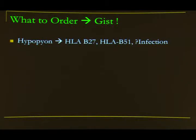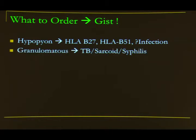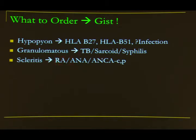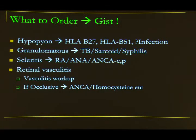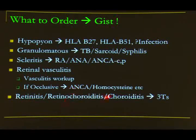What to order: for hypopyon, depending on history, order HLA-B27, B51, or consider infection. For granulomatous uveitis, think TB, sarcoid, or syphilis. For non-necrotizing scleritis, order RA and ANA; for necrotizing scleritis, order ANCA. For retinal vasculitis with occlusive evidence, add ANCA and homocysteine. For retinitis, chorioretinitis, or choroiditis, think TB, treponema, or toxoplasma; if atypical, aqueous tap or vitreous biopsy is the answer.